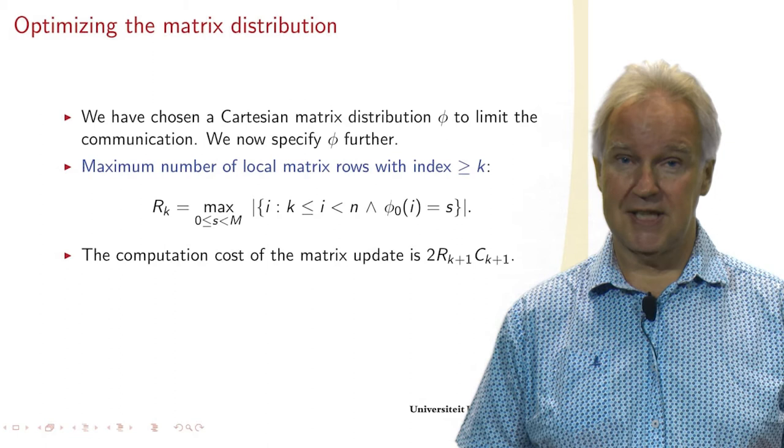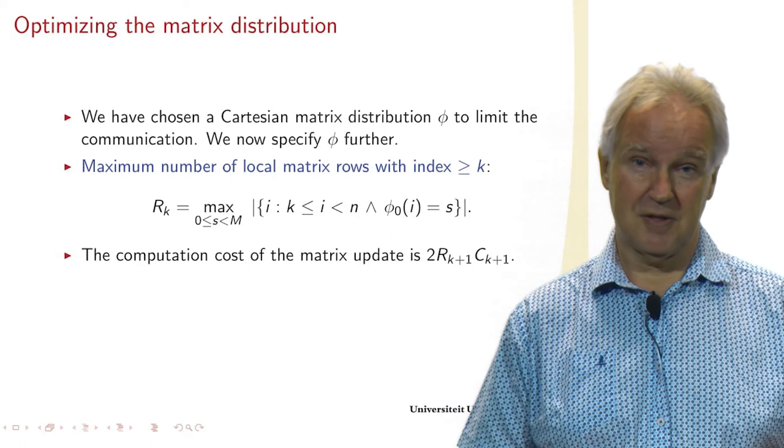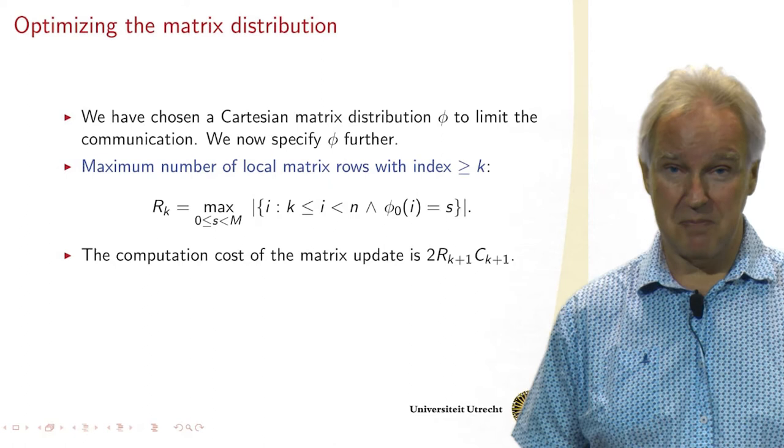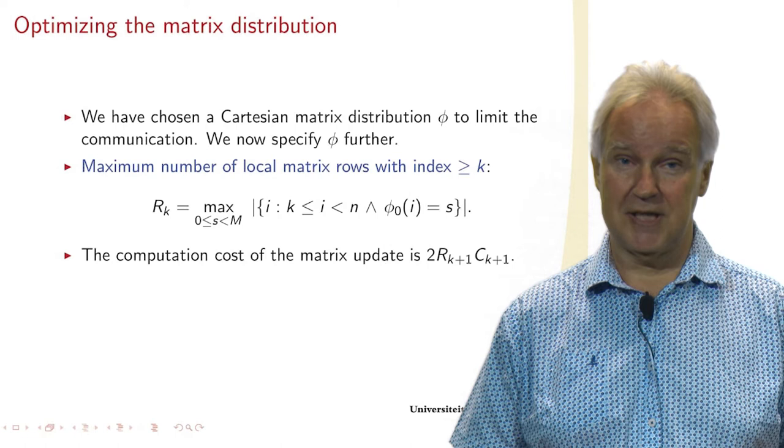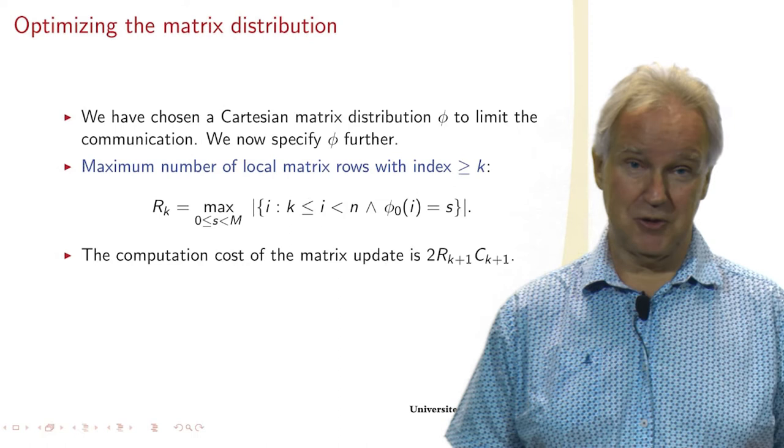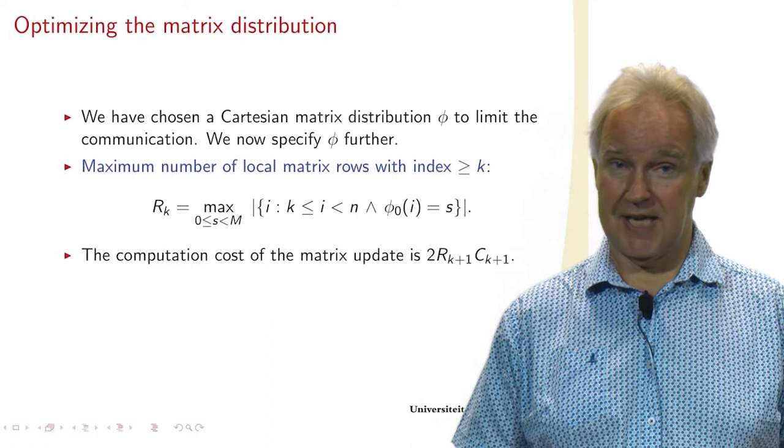We also want to analyze the cost of the algorithm in order to understand the time it will take, but also to see if it is an efficient algorithm. And for this, we introduce another term, R_K. This is the maximum number of local matrix rows with an index larger than or equal to K. This tells you something about how many matrix elements you have to update.